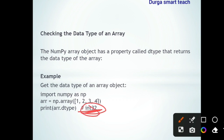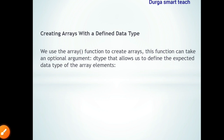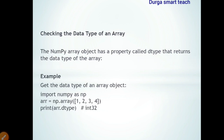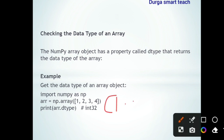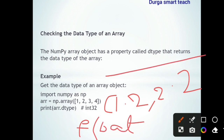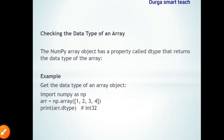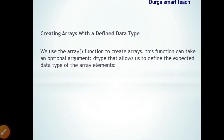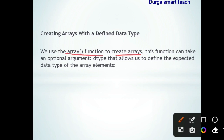If you store elements like 1.2, 2.2, it will return float. If you store all strings, it will return string. You can also create an array with your own defined data type. The `array()` function accepts an optional argument `dtype` that allows you to define the expected data type of the array.